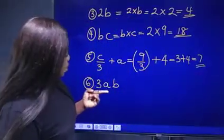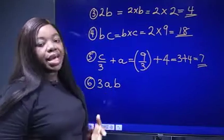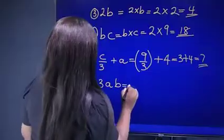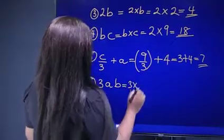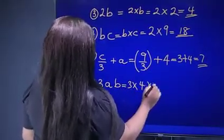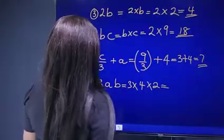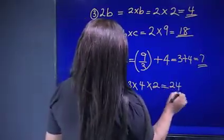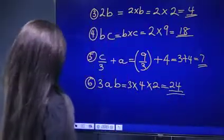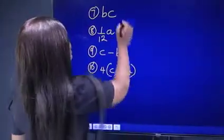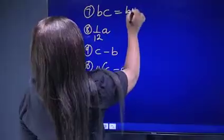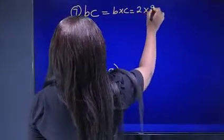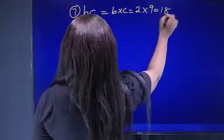The next one is 3ab. 3ab means 3 times a times b. So that equals 3 times the value of a, which is 4, times the value of b, which is 2. Multiplying: 3 times 4 is 12, and 12 times 2 is 24. What is bc? bc means b times c. The value of b is 2 and the value of c is 9, so 2 times 9 equals 18.